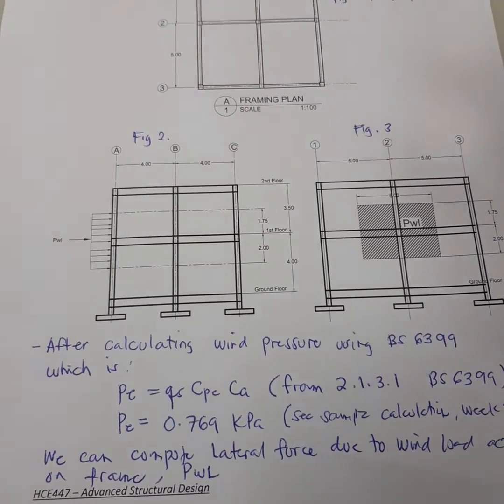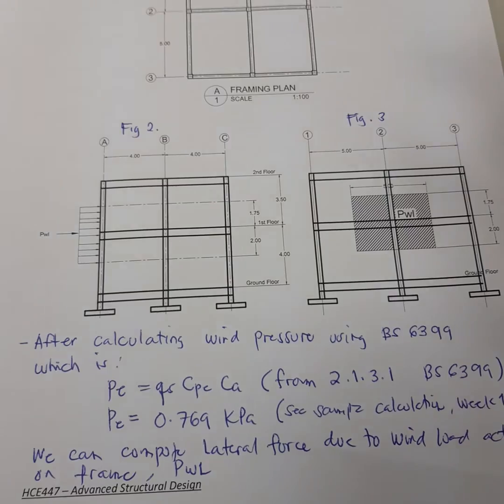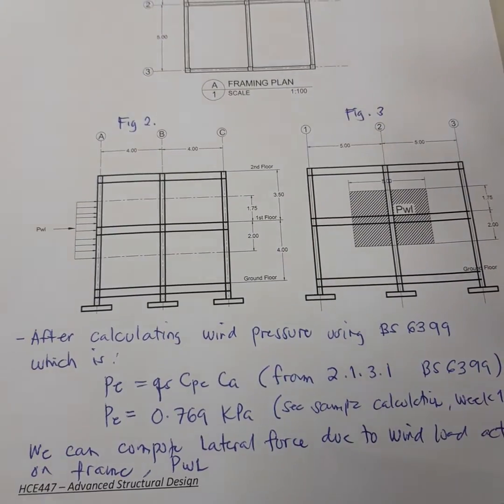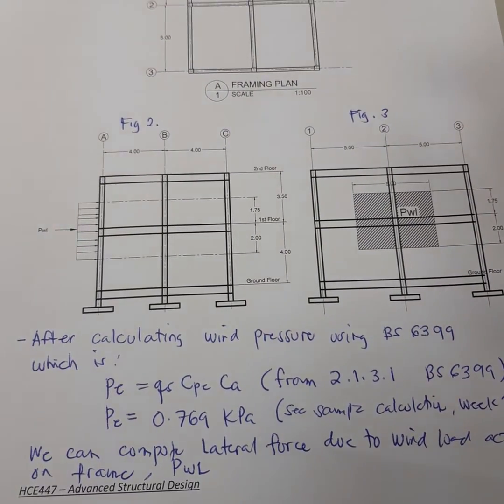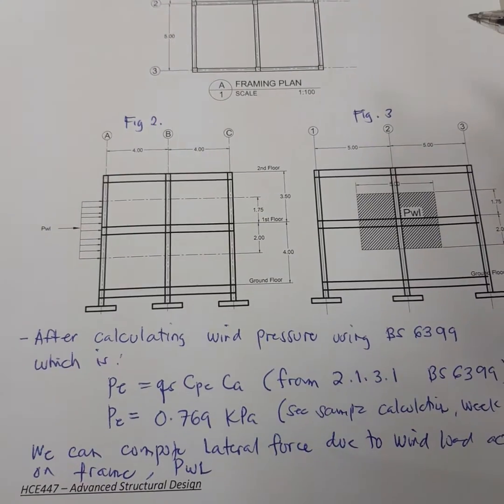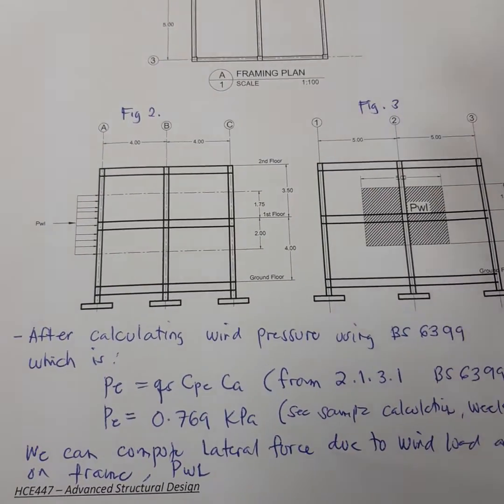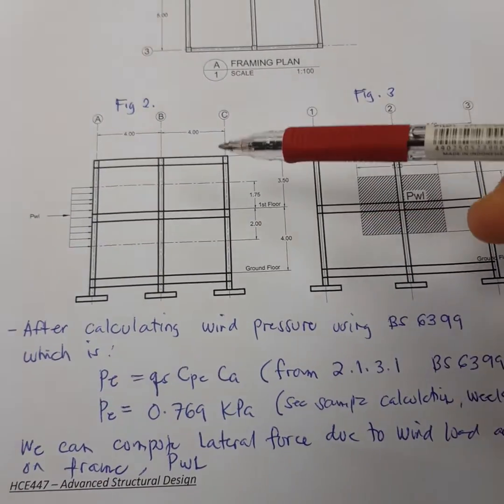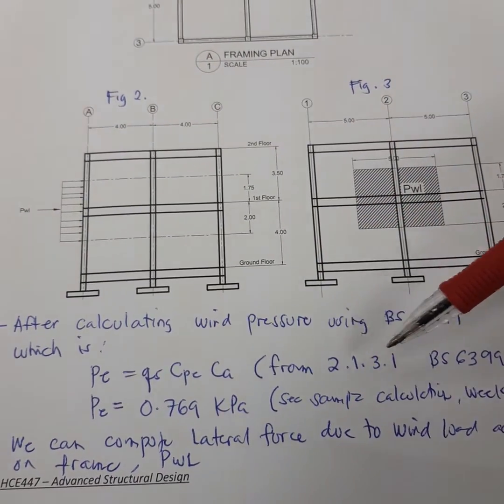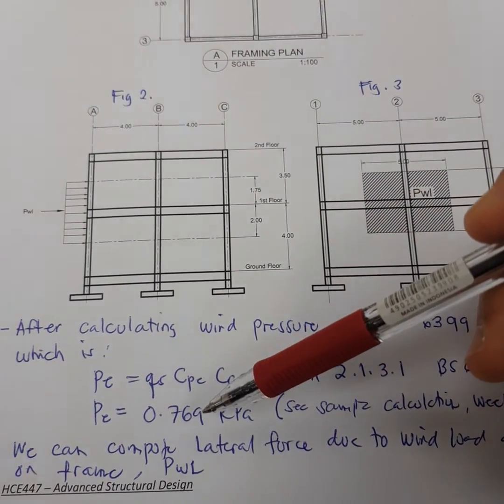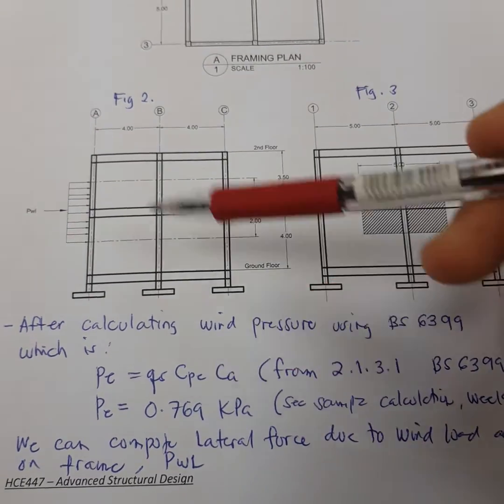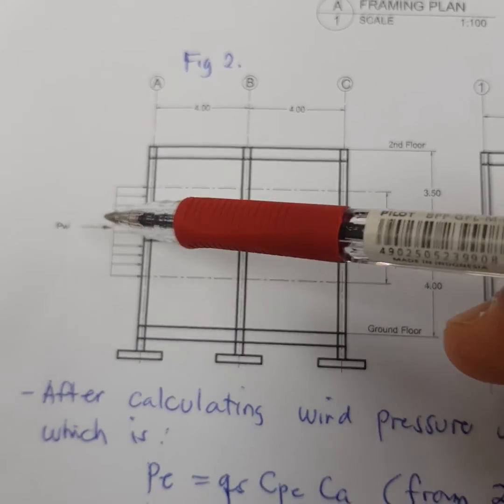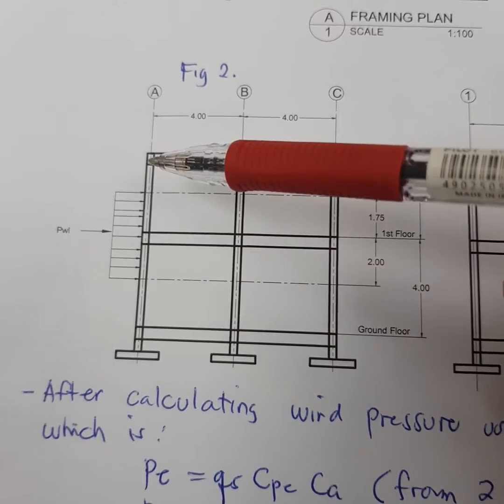I will show you how to calculate the lateral forces on the frame. This is very clear in this handout that I will give you a brief explanation. After you calculate the wind pressure from BS 6399, which is for example 0.769, you shall use this in calculating the lateral forces.